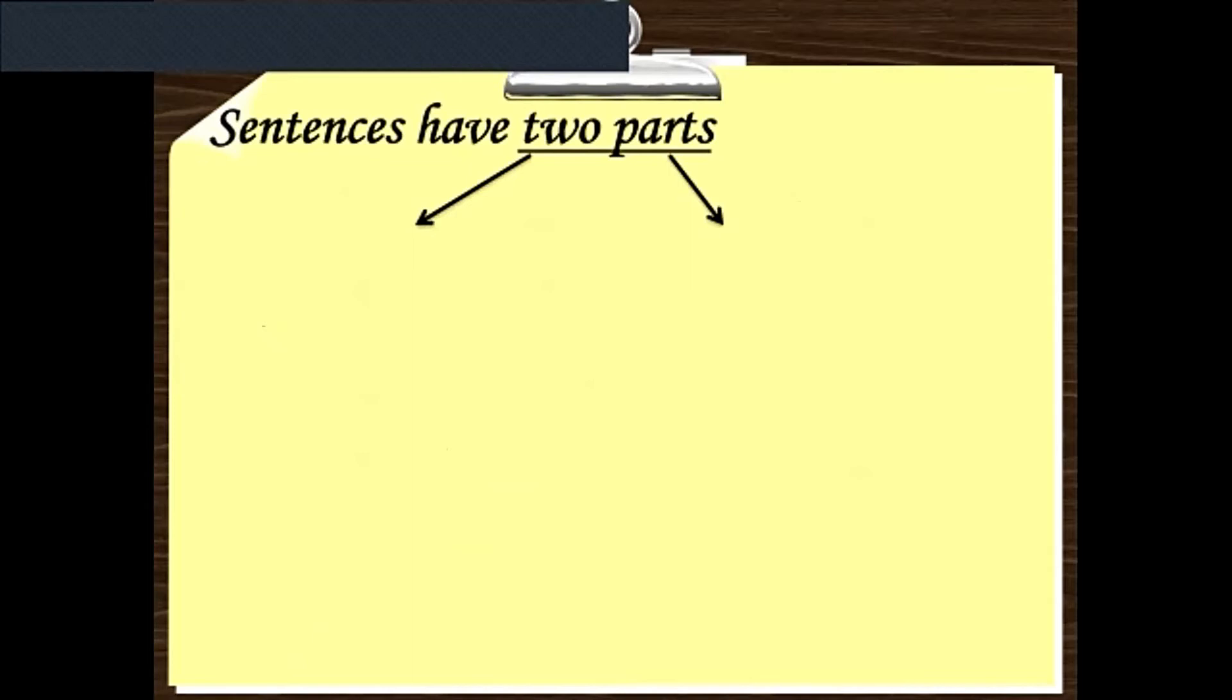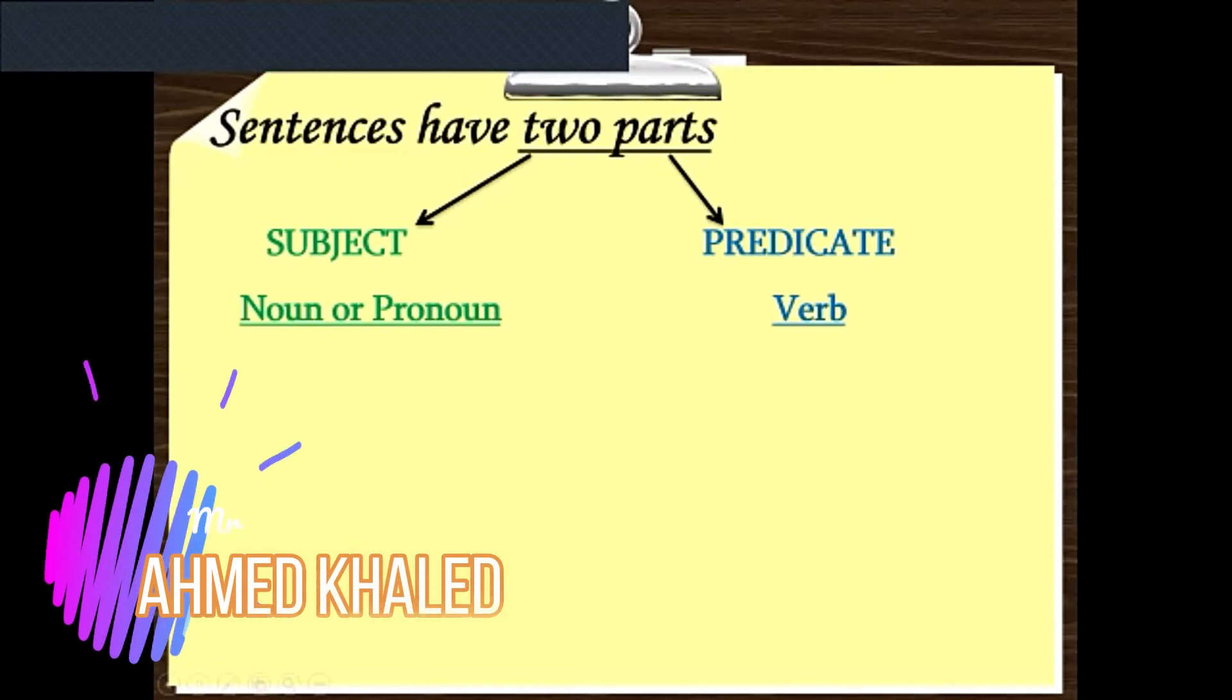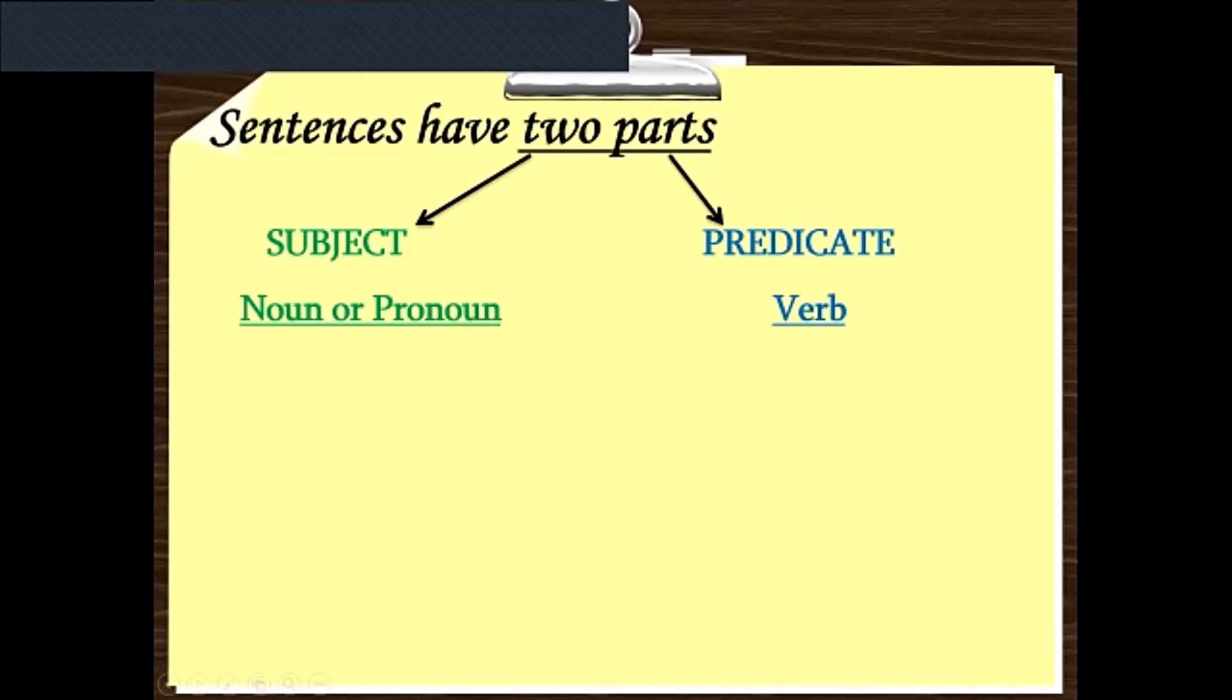The sentence has two parts. So sentences have two parts: subject and predicate. But again, I repeat, this subject and the predicate must give a complete thought. The subject must be a noun or a pronoun. The predicate, the main predicate, or the simple predicate, is the verb, and the full predicate is the completion of the sentence.